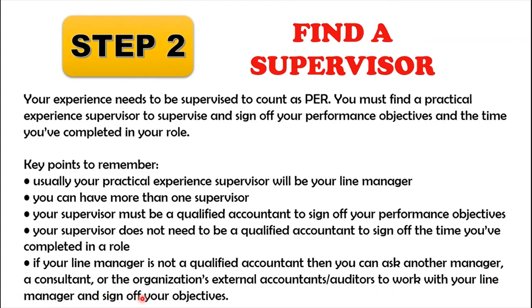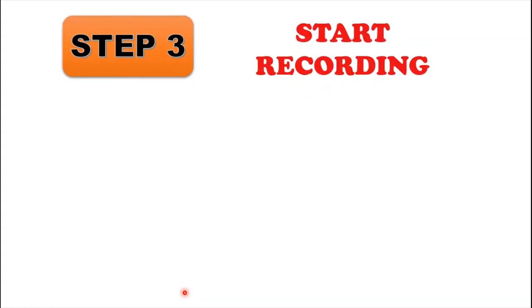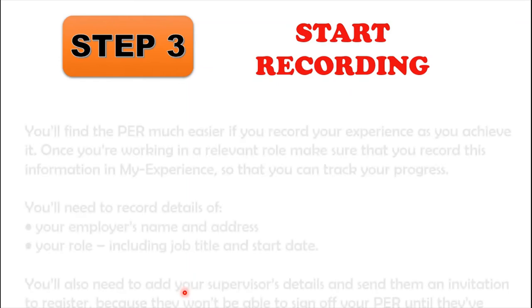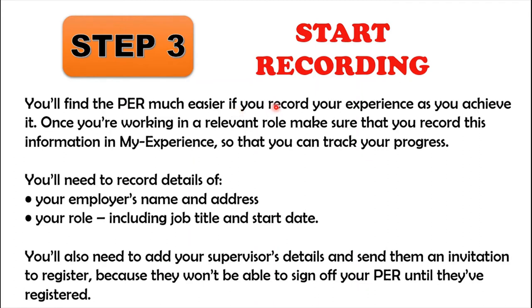Step three is: start recording. You will find PER much easier if you record your experience as you achieve it, that is on a day-to-day basis. Once you are working in a relevant role, make sure that you record this experience in your My Experience account so that you can track your progress. You will need to record details of your employer's name and address, and your role including job title and start date.